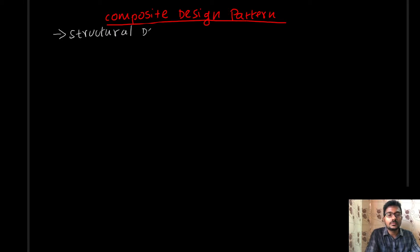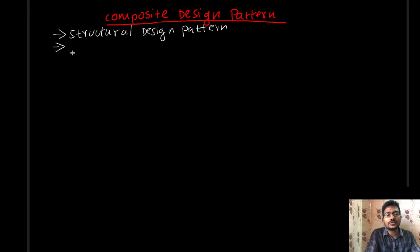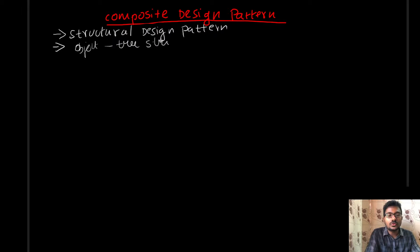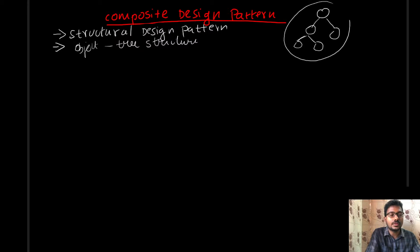The main motto of the composite design pattern is: if your object can be represented in a tree structure, then it can be considered as a composite design pattern. So you need to represent the object in a tree structure. For example, we can consider a diagram — this is your complex object.